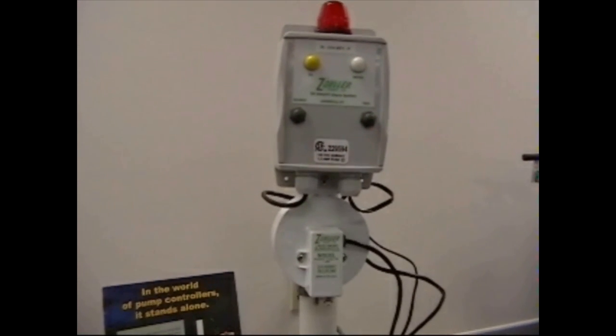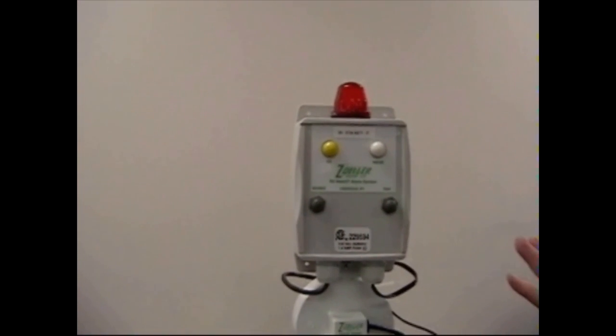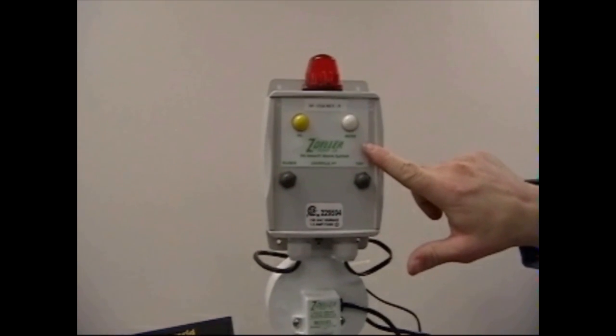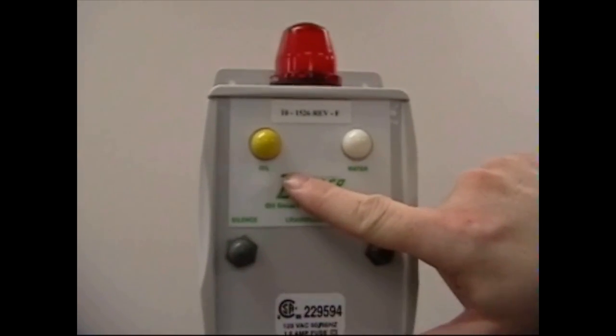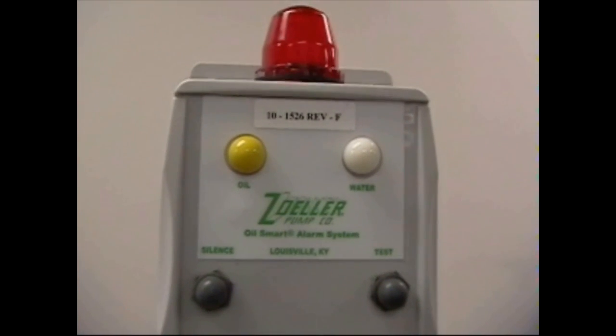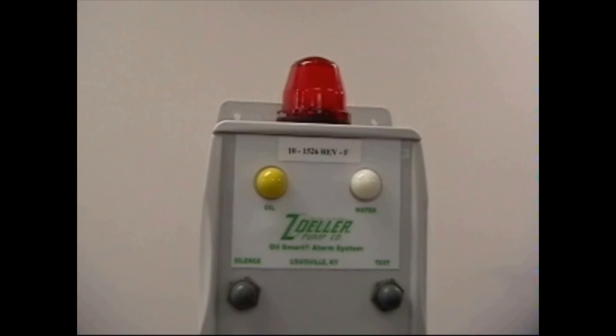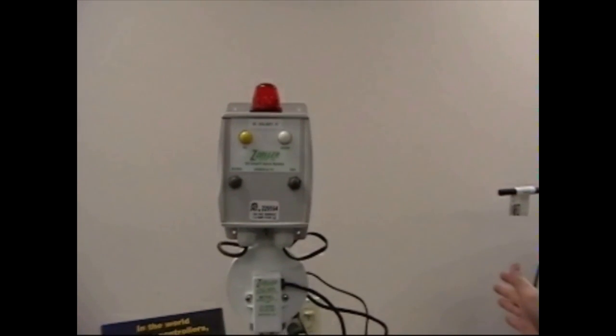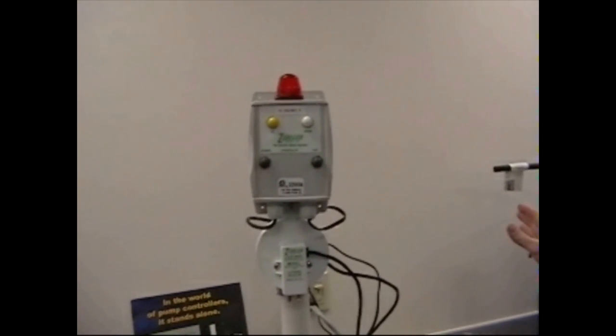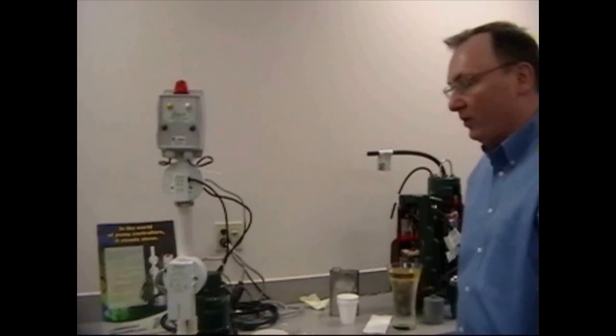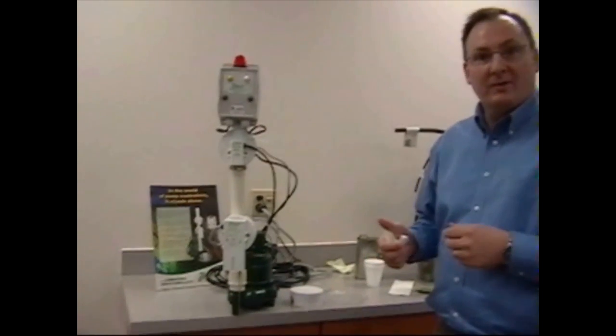The third component of the system is the alarm box. This is a sealed UL listed box that will indicate either if there's a high water condition or a high oil condition. It comes with a test and silence switch, and it also includes dry contacts that allow you to relay that information to a monitoring center so it can be monitored offsite. Those are the three main components of the OilSmart system. Thank you very much.